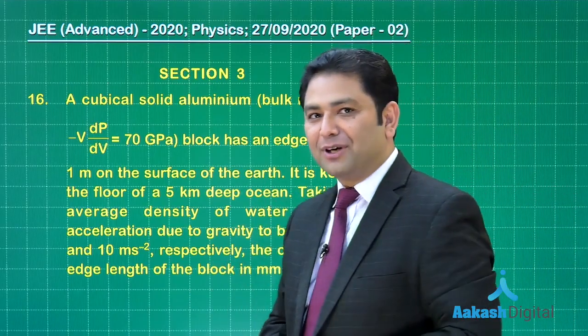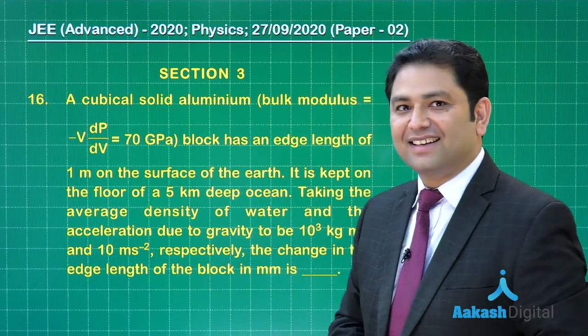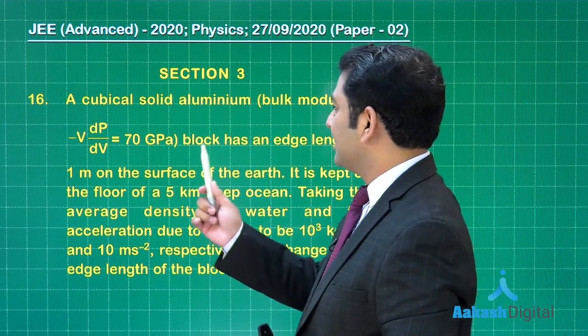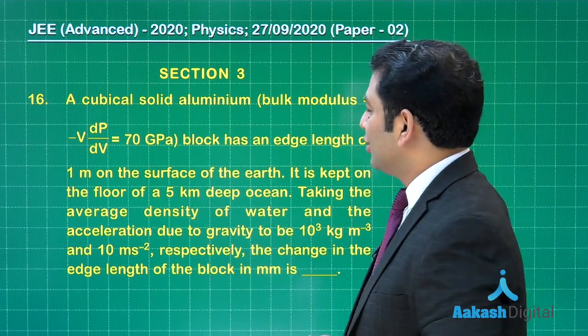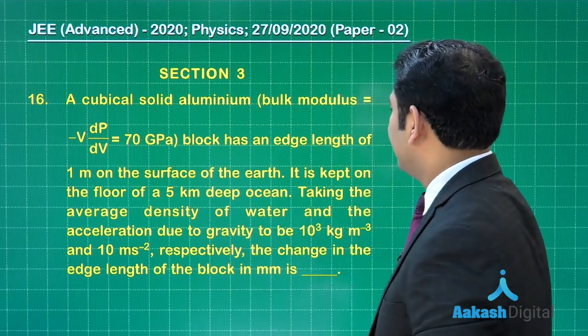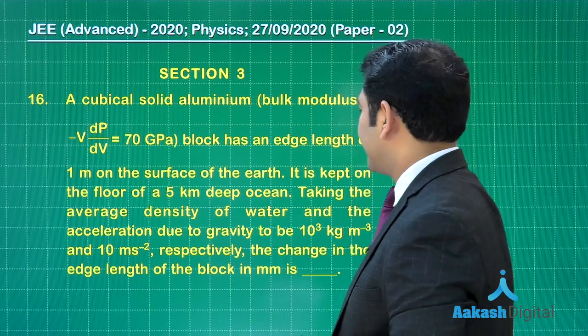Okay, question number 16, properties of bulk matter. It is a very straightforward and regular question. There is a cubical solid aluminum whose bulk modulus has been given as 70 gigapascal and the edge length is also given.